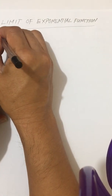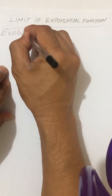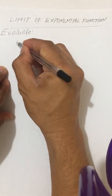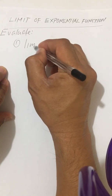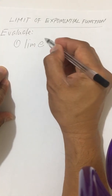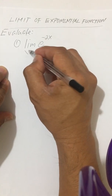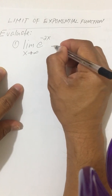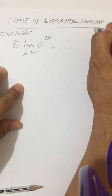Suppose you are asked to evaluate the following limits. Number one: evaluate the limit of e to the power of negative 2x as x approaches positive infinity.